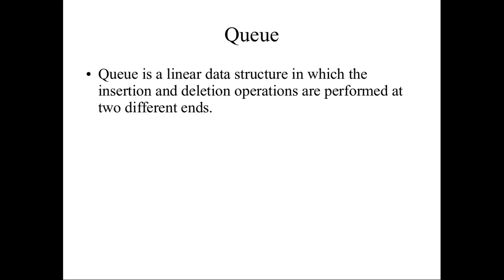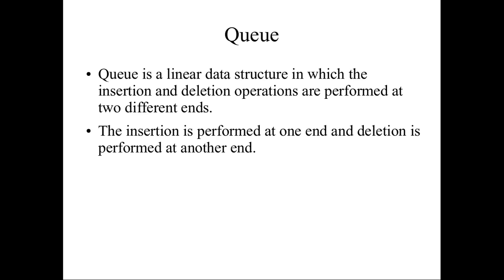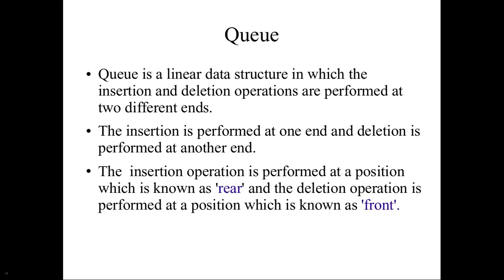Queue is a linear data structure in which insertion and deletion operations are performed at two different ends. We call them the front end and the rear end. Insertion will be performed at one end and deletion will be performed at the other end.